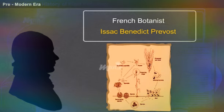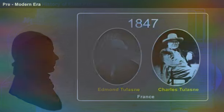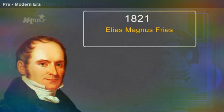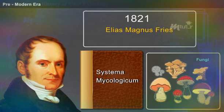His work was confirmed in 1847 by the Tulasne brothers. Further, in 1821, Elias Magnus Fries published the book Systema Mycologicum, which served as the beginning of nomenclature for fungi. He was regarded as the Linnaeus of mycology.